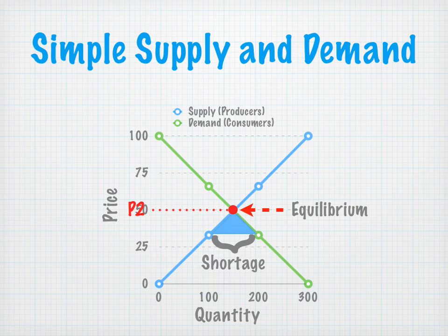All that to say: there is incentive for producers to produce more at higher prices, but higher prices also drive consumer demand down. When the price is lowered, there is less incentive for producers to produce, and when the price is lowered, there is more demand for a certain good.